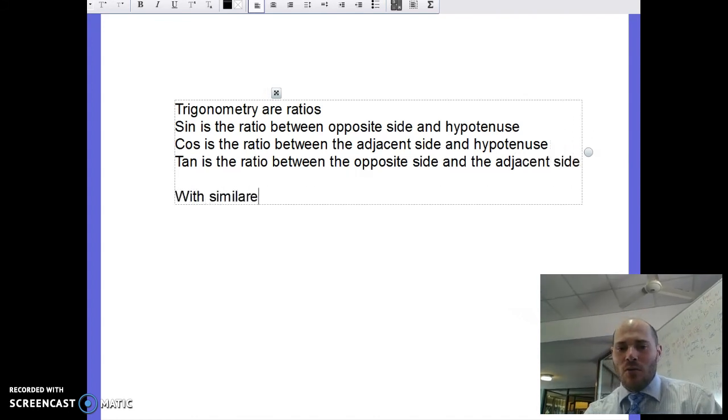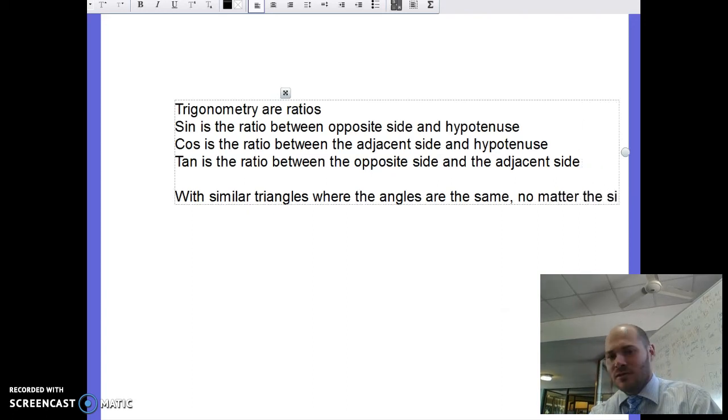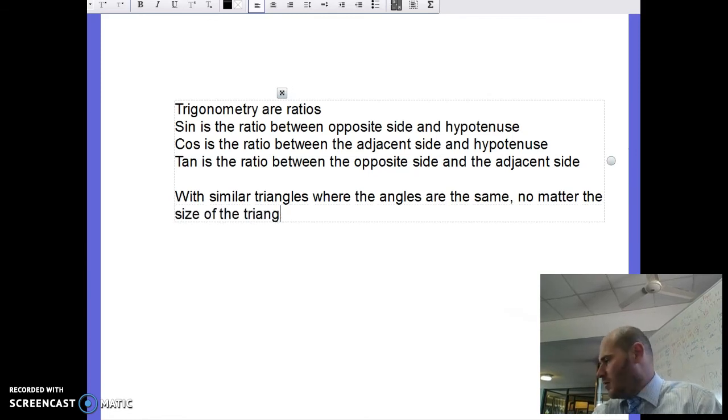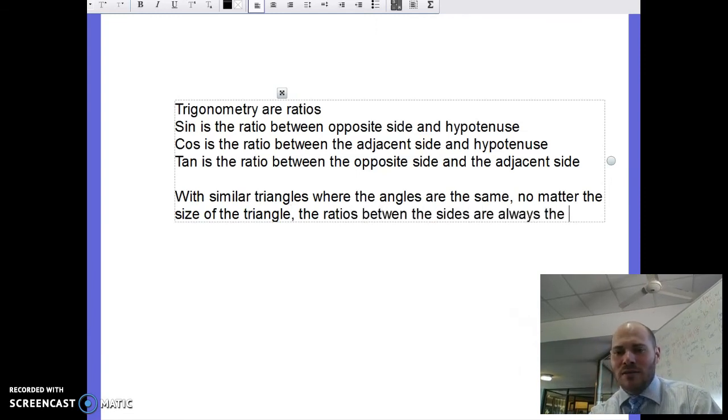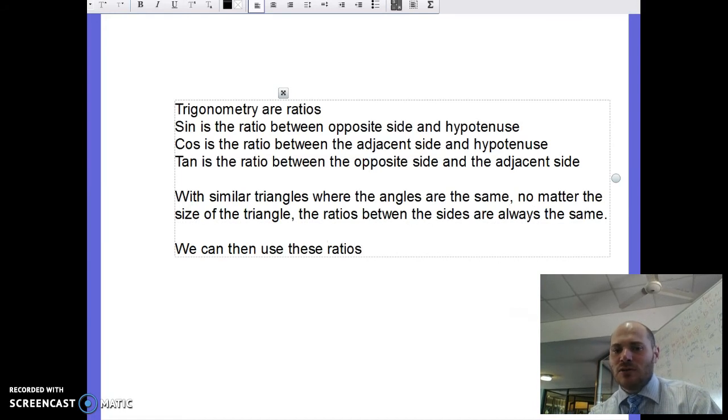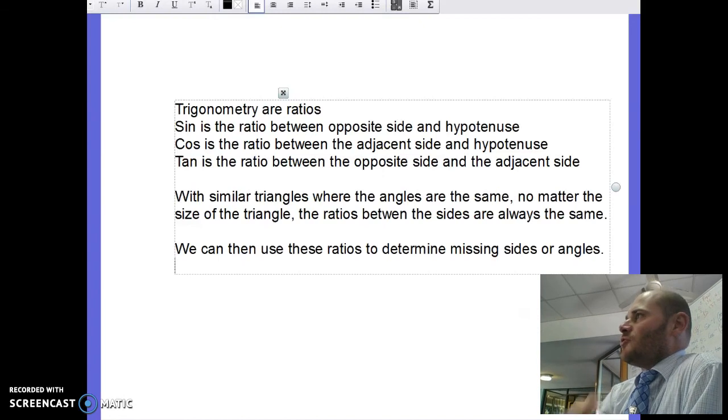And what they figured is with similar triangles where the angles are the same no matter the size of the triangle, the ratios between the sides are always the same. We can then use these ratios to determine missing sides or angles. And it's only because we know that the ratio is always going to be the same that we're able to do that.